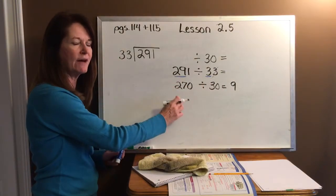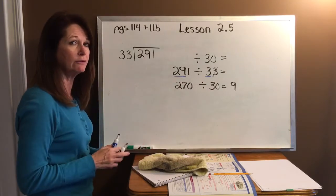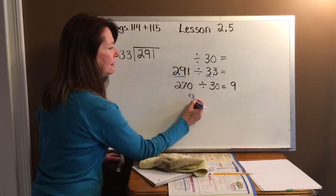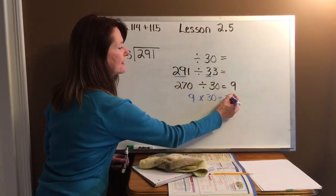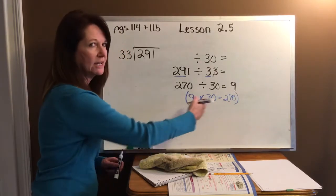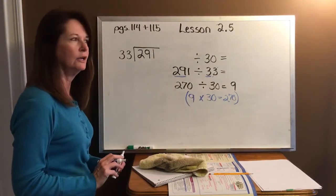270 divided by 30 equals nine. I can change that around, as you know, and make a multiplication problem. So it would be nine times 30. That would equal 270. This was my thought process to get this estimated as nine. All right, so now let's go the other way.